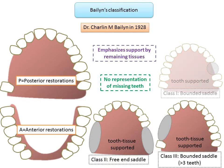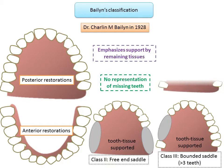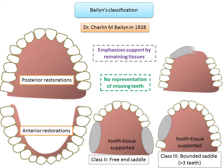In cases where anterior and posterior teeth are missing, the class of anterior and posterior teeth are mentioned separately. For example, this image would be Balen's A3, as teeth are missing in the anterior region — corresponding to 'A' — and Class 3 because it is a bounded saddle with more than three teeth missing.